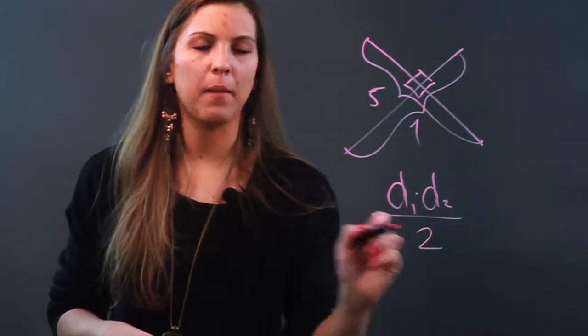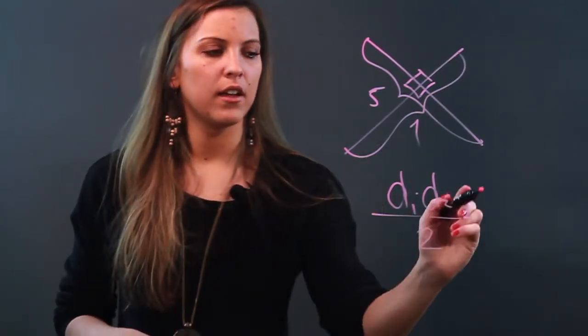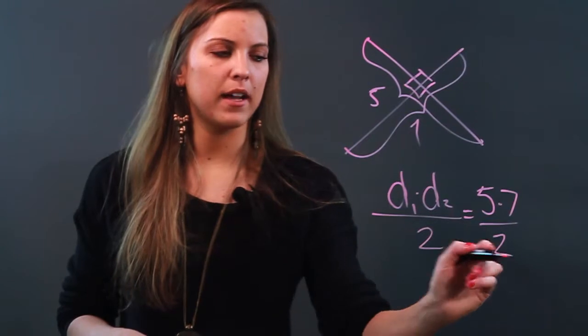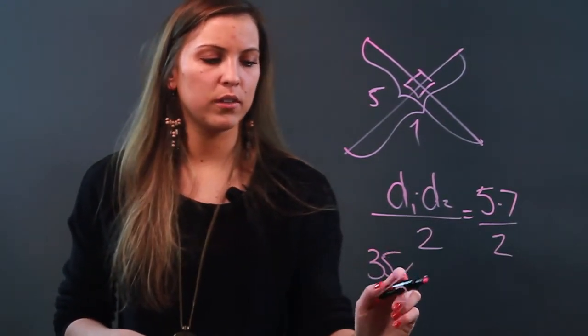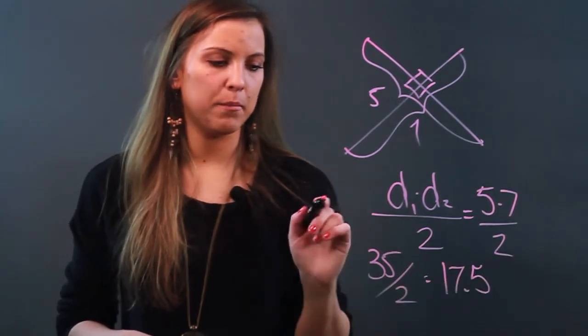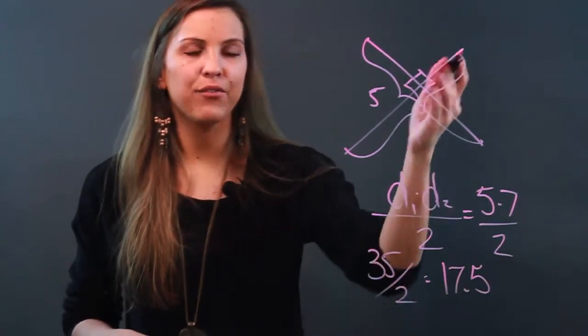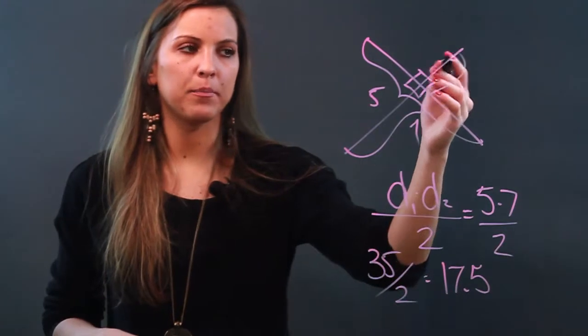So I would get 5 times 7 divided by 2, so I'm going to get 35 divided by 2, and that will equal 17.5. So if my diagonals cross and become perpendicular lines, then I can use the formula.